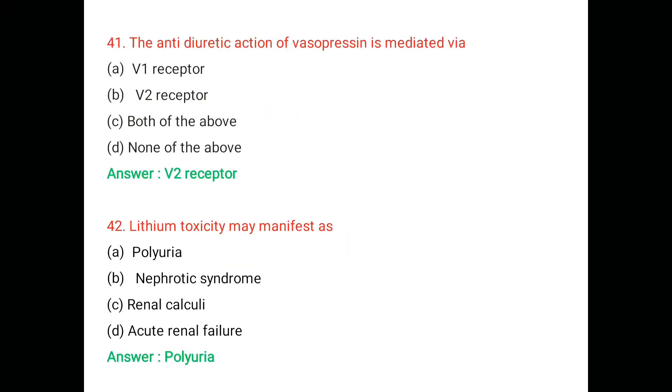Question number 41. The antidiuretic action of vasopressin is mediated via: A. V1 receptor, B. V2 receptor, C. Both of the above, D. None of the above. The right answer is V2 receptor.